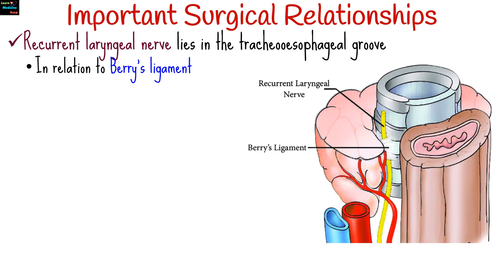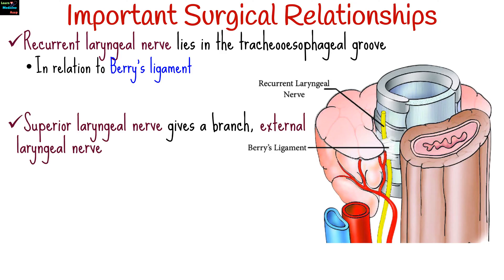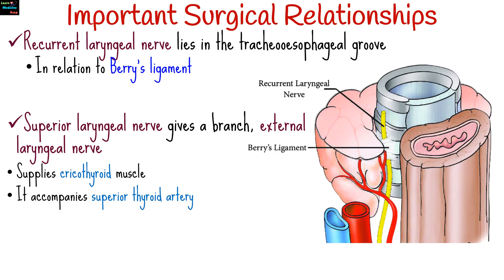The recurrent laryngeal nerve lies in the tracheoesophageal groove in relation to Berry's ligament. The superior laryngeal nerve gives a branch — the external laryngeal nerve — which supplies the cricothyroid muscle and accompanies the superior thyroid artery.